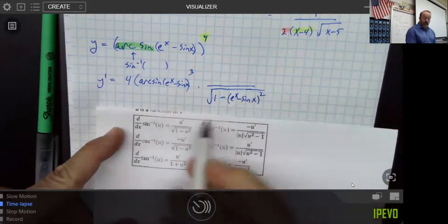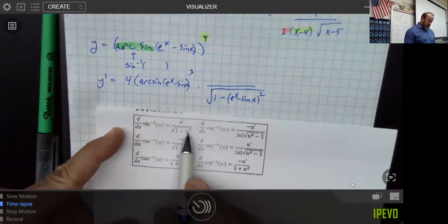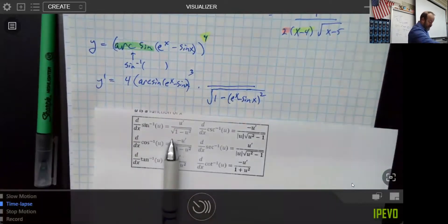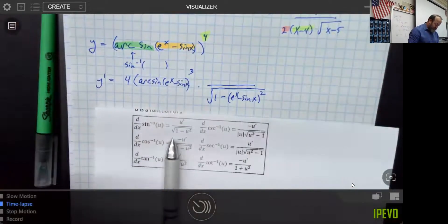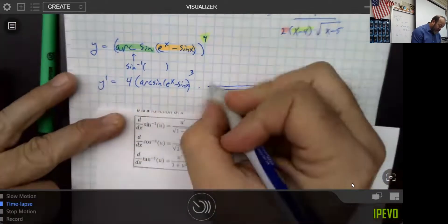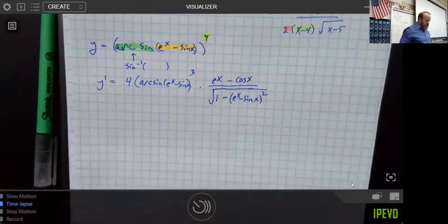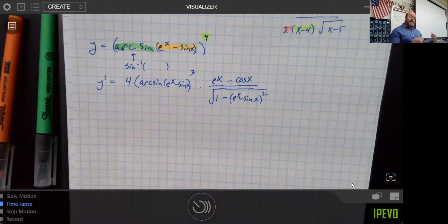So, the interior function is e to the x minus sine x. So, that is my what we would call u that is being squared. And then the only thing that I have left to do is the u prime, which is this portion right here. And I think we've done that enough to know that the derivative of e to the x is e to the x, and the derivative of negative sine is a negative cosine. So, this particular problem would have been almost impossible for me to do using my other version. I don't think I could make a triangle out of this problem and actually come up with an easy, successful solution.